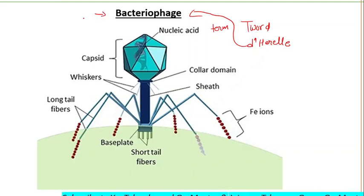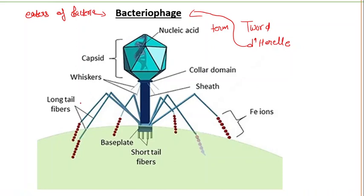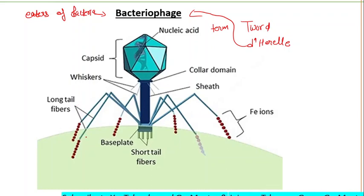Bacteriophages are the eaters of bacteria — they are viruses that attack bacteria. Their morphology may vary; they can have polyhedral, filamentous, or complex structures. Complex phages have a polyhedral head to which a tail and sometimes other appendages are attached. Phage T4 is an example of a complex phage.